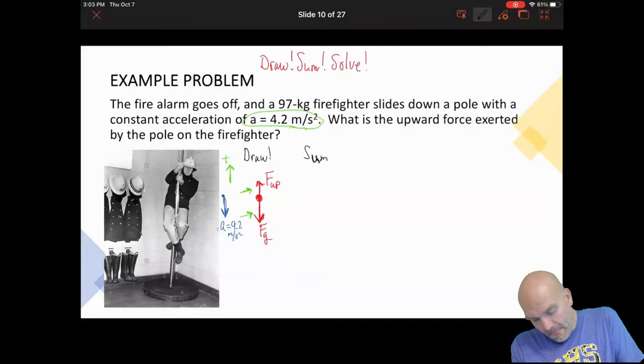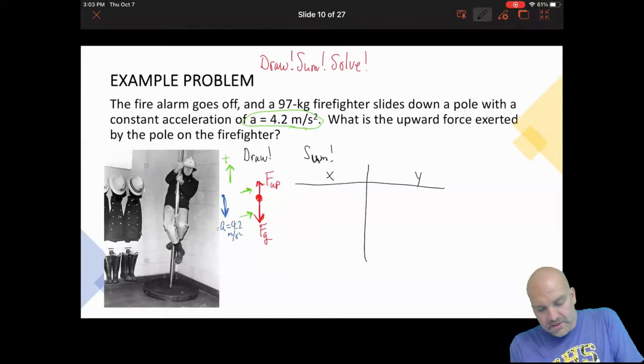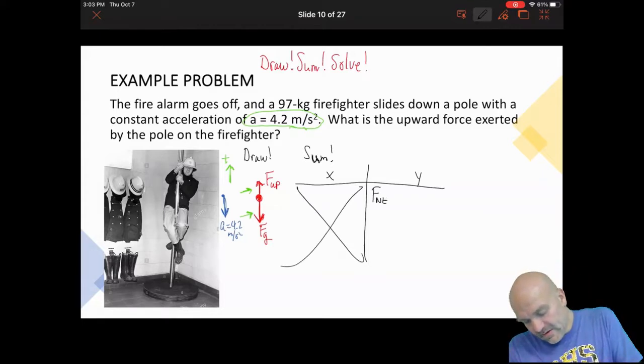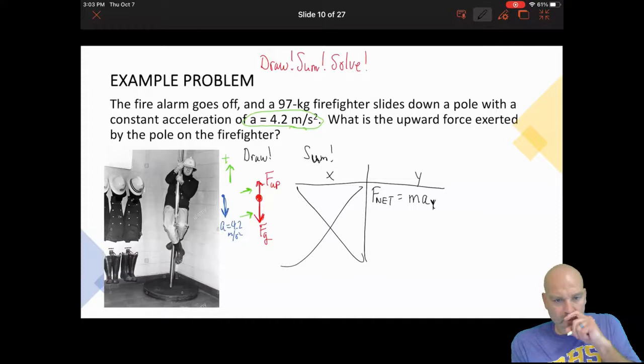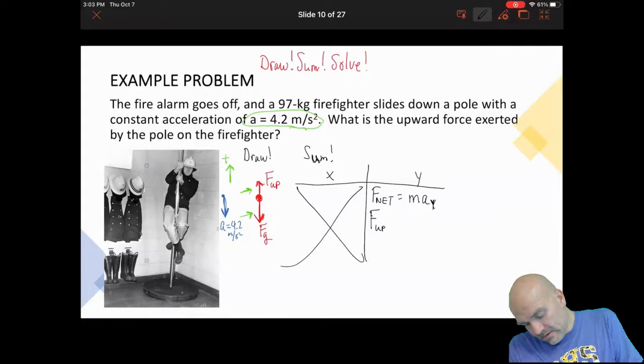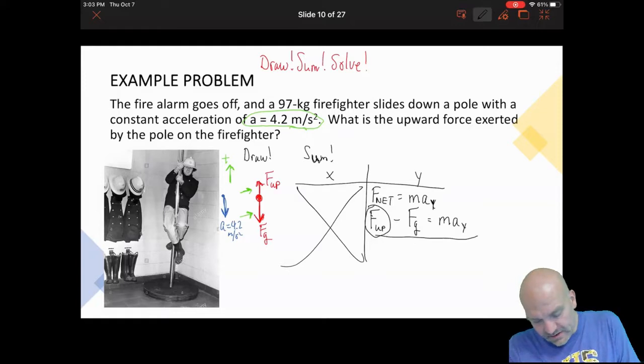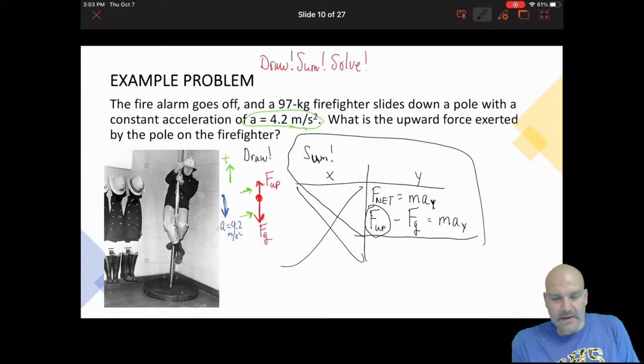Now I'm going to do my sum step. Again, I like to use a T chart, you do whatever's comfortable for you. In fact, I don't really need to do a T chart because I'm not moving horizontally, so I'm only going to look at the y direction. Let's say F_net equals m times a in the y direction. So what forces do I have acting? I have an up force, I have a weight down, and it's going to equal to m times a in the y direction. I'm solving for it, so there's my sum step.